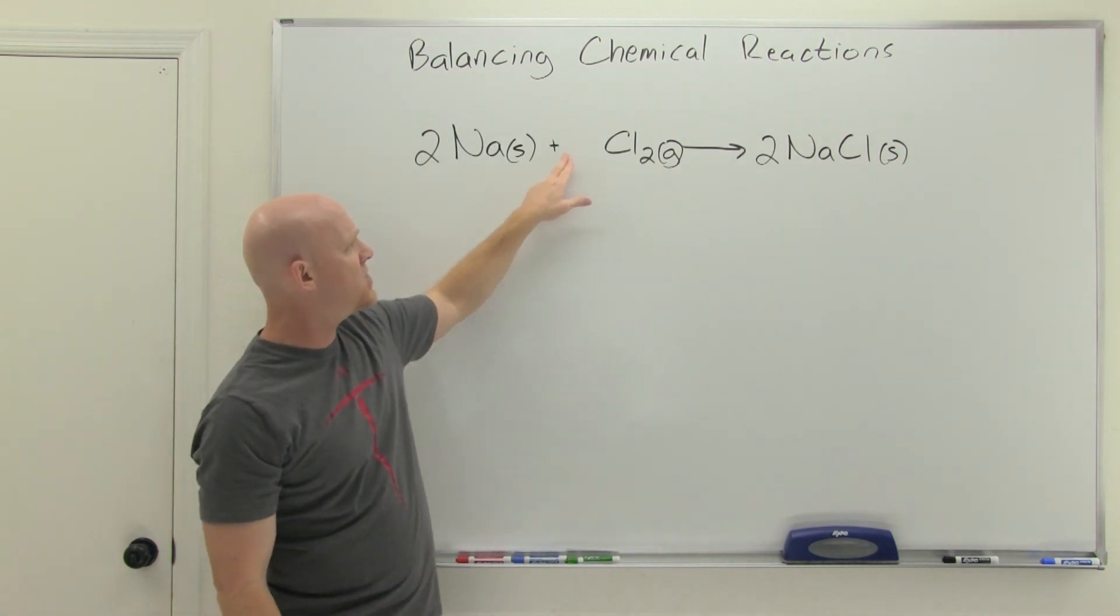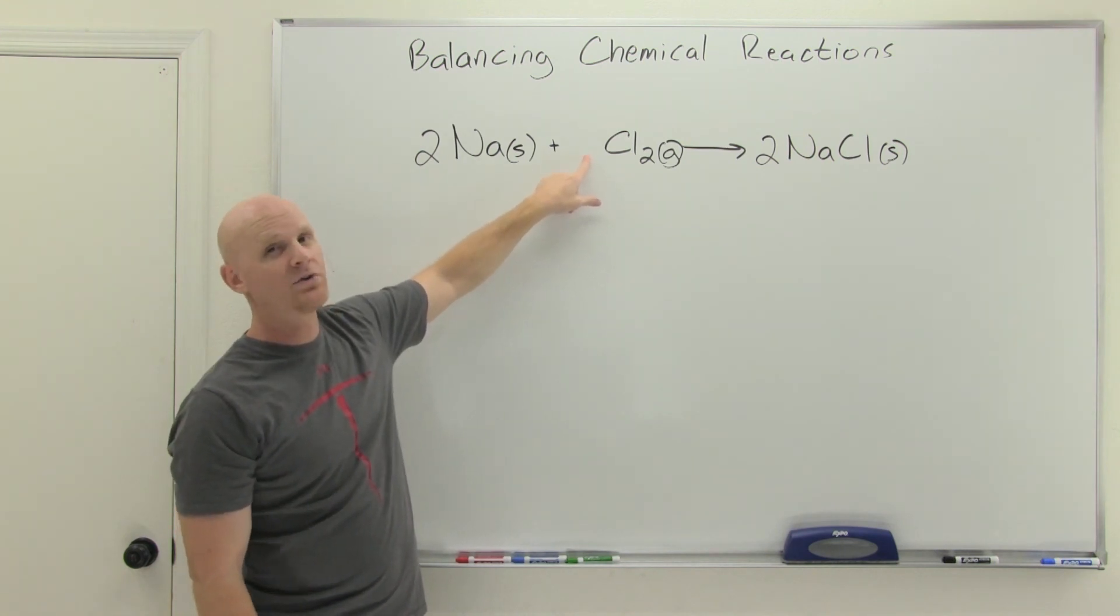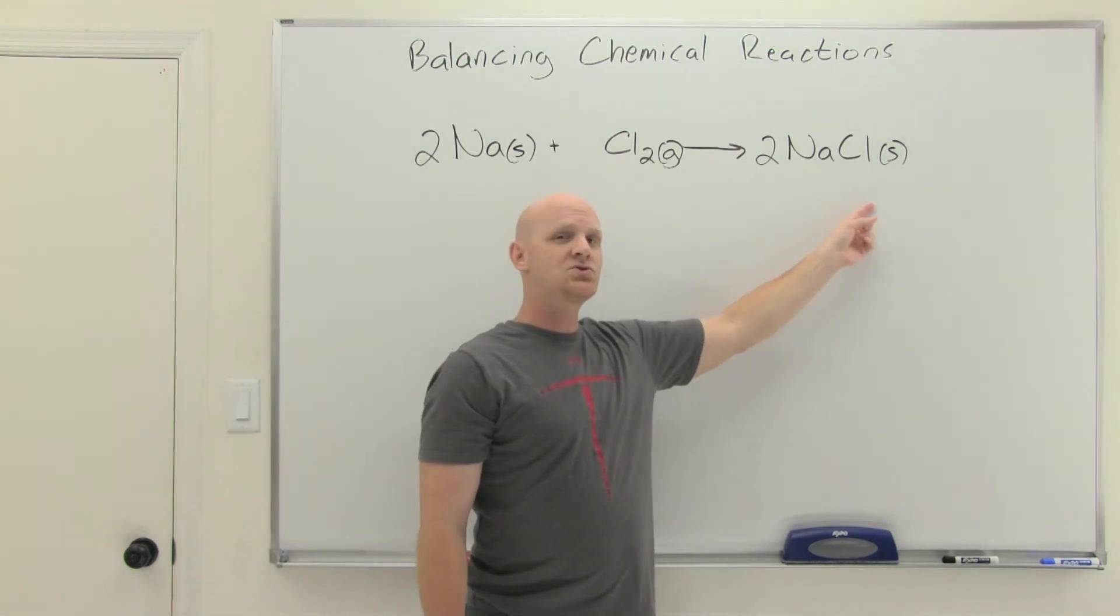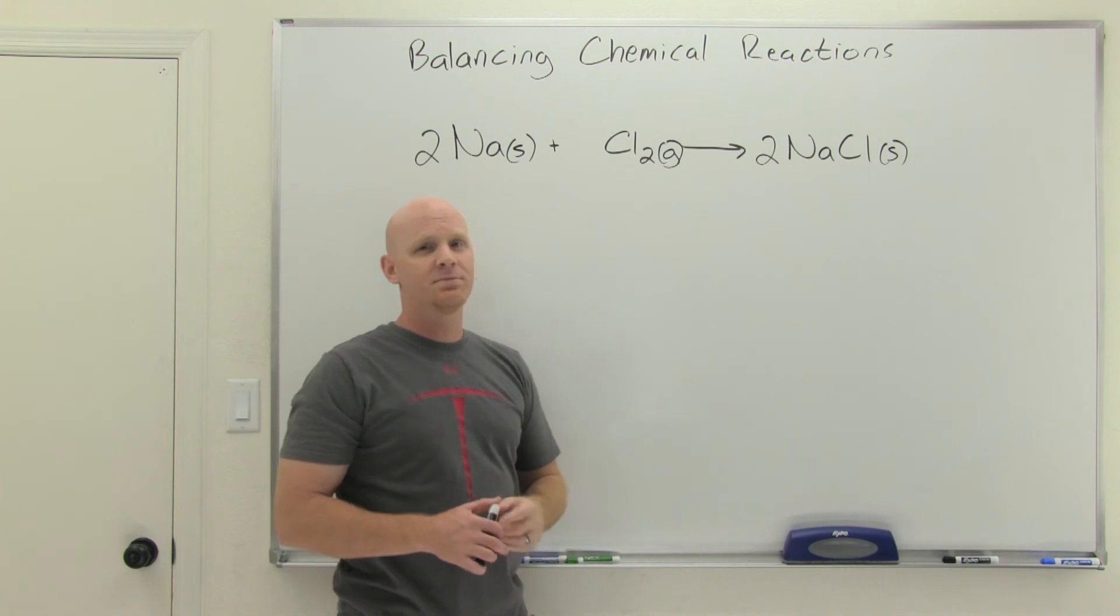So at this point, this chemical reaction is now balanced. Two sodiums, and when there's no coefficient placed in front of a species, it's implied that there's a one there. You don't typically write the one, but it's implied that that means one Cl2. And that's going to give two NaCls, and we've got conservation of all the atoms of both types of elements.